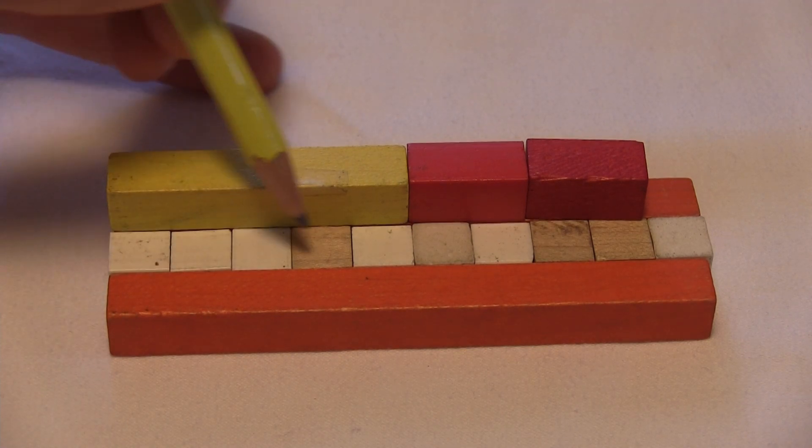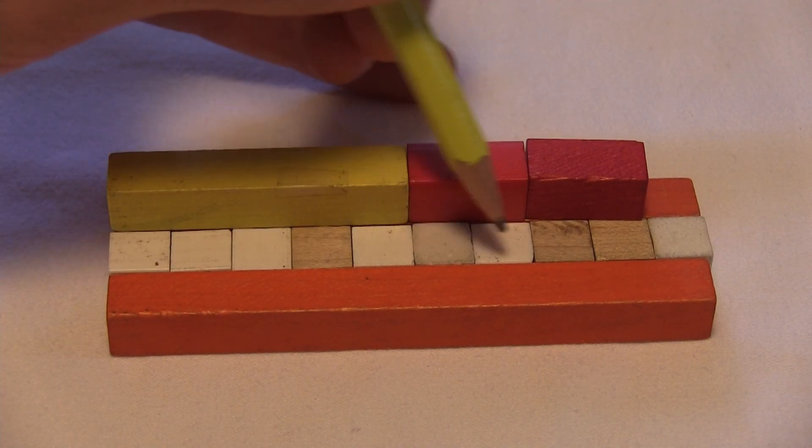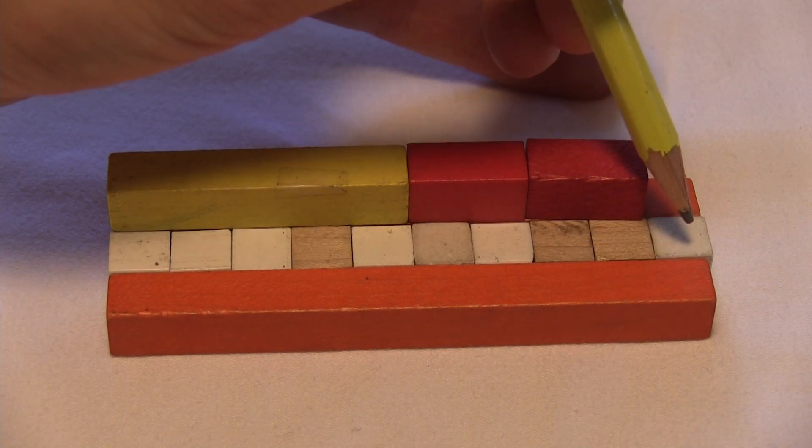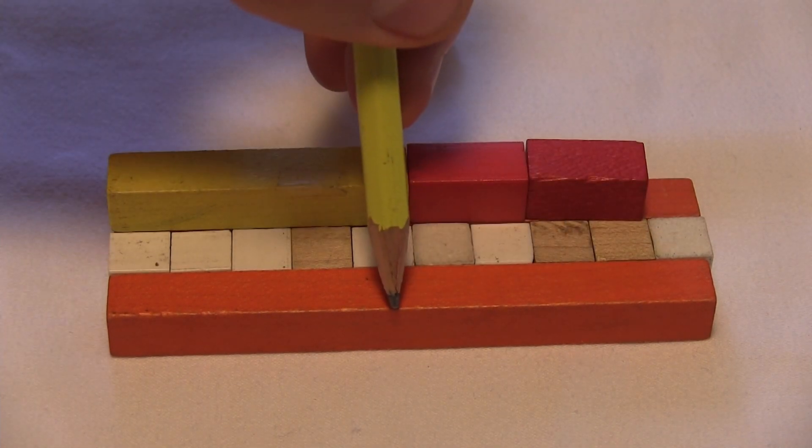One, two, three, four, five, six, seven, eight, nine, ten. So ten of the white cubes equal one whole.